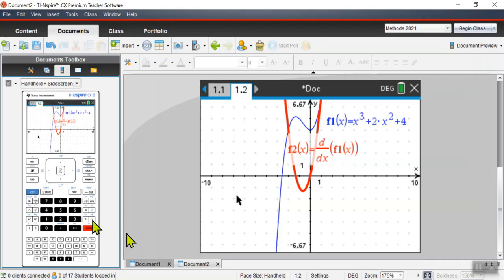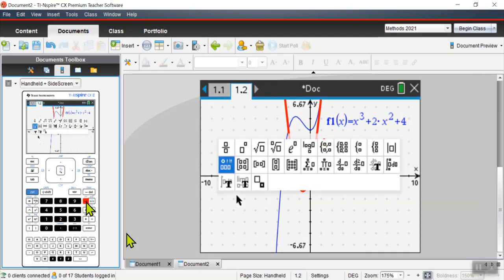And then if you want the second derivative, you can do the second derivative of that. Or you can type in, where is it? There. See that button there? Second derivative. You can also do that.